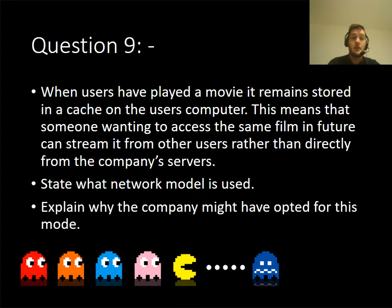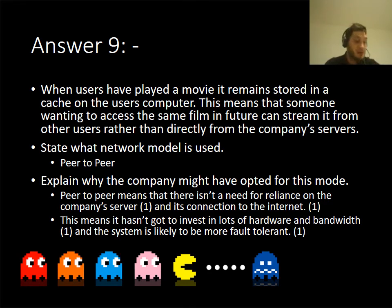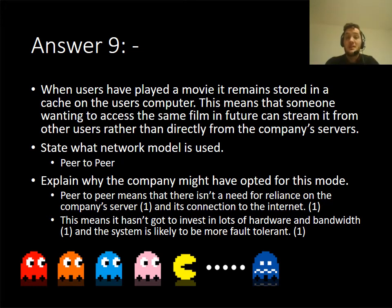Question nine: when users play a movie, it remains stored in the cache on the computer, meaning somebody watching the same film in future can stream it. The question asks what network model — not topology — is being used. The two models are client-server and peer-to-peer. Because it's file streaming, the answer is peer-to-peer — it would also accept a hybrid. The point is there doesn't need to be one server; files come from multiple users. This is file sharing, so you don't need to invest in lots of hardware or bandwidth.